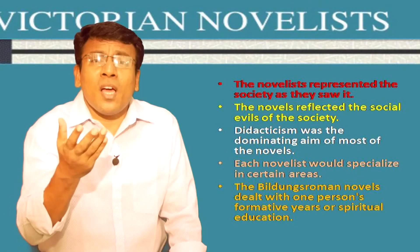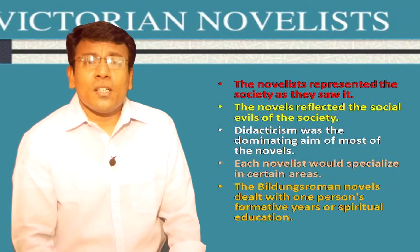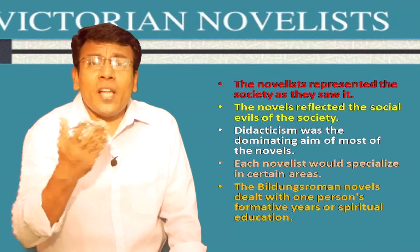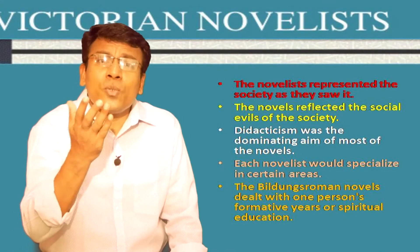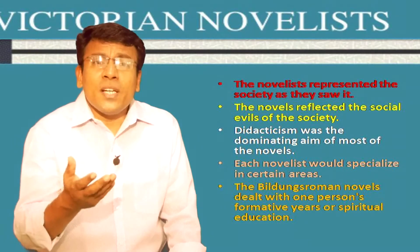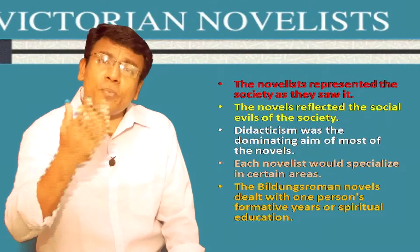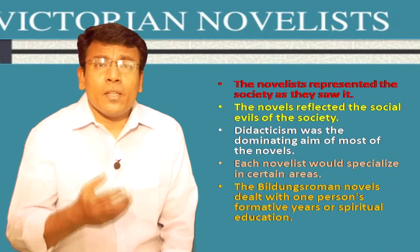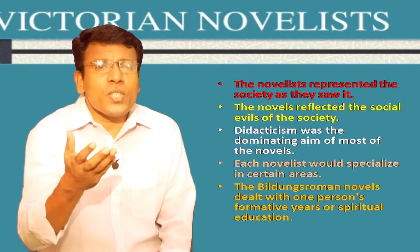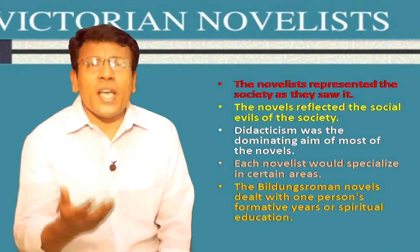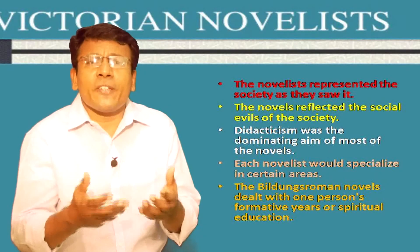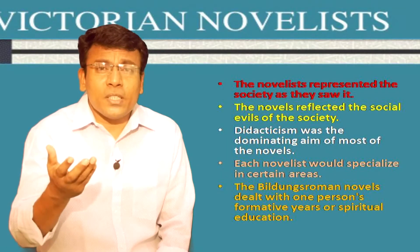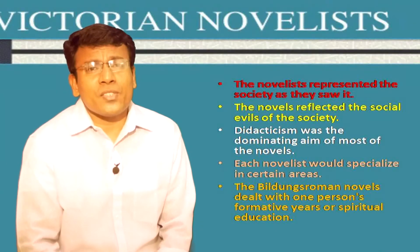One of the most popular types of novels at that time was the Bildungsroman, which traced the life of the protagonist from infancy to early adulthood, dealing with one person's formative years or spiritual education. The Victorian novelists felt a social and moral responsibility to portray society realistically, to denounce the injustices of society, and to express faith in progress. Very often, the plots of the novels were long and complicated by many subplots.